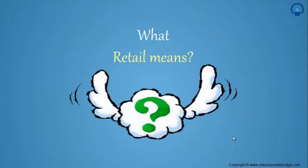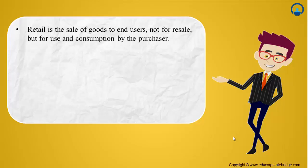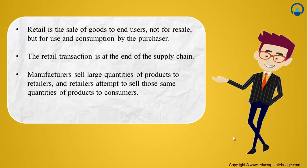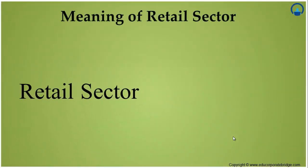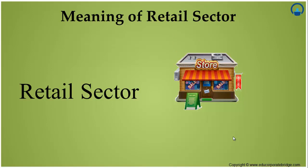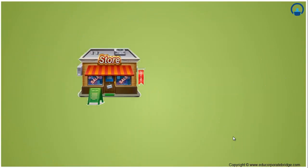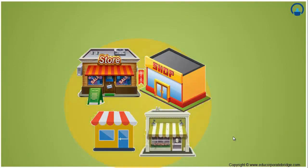I know you are very curious to know the meaning of the word retail. Retail is the sale of goods to end users, not for resale but for use and consumption by the purchaser. The retail transaction, i.e. when we buy something from the store, is at the end of the supply chain. Manufacturers sell large quantities of products to retailers and retailers attempt to sell those same quantities of products to customers. The retail sector includes all the shops that sell goods to the ultimate customer who buys them for personal use. It consists of all kinds of shops from small groceries to supermarket chains and large department stores.